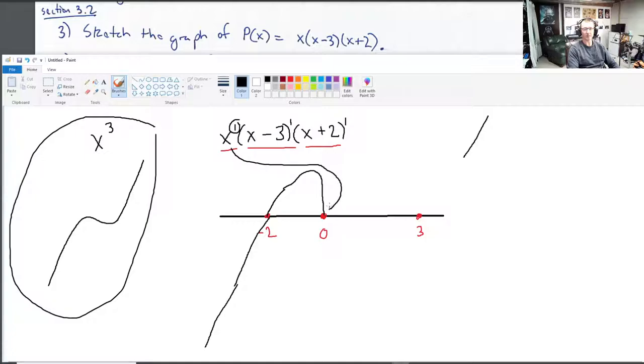Because of this odd multiplicity, this zero has the behavior where our graph goes right through that zero, which is zero. And then lastly, our graph comes down a bit and then goes back up to this zero. And because of this odd multiplicity, our graph continues through and reconnects up here.